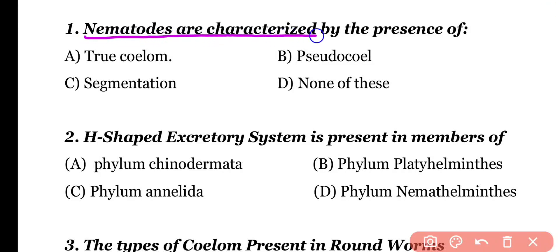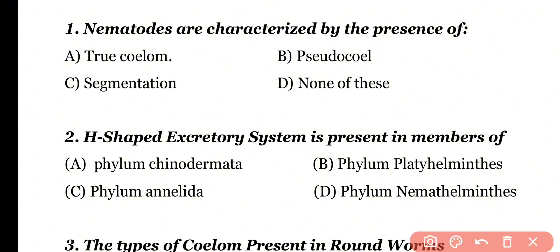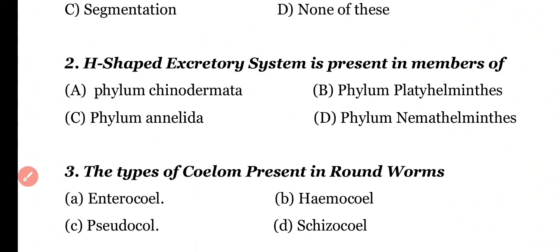Question 1: Nematodes are characterized by the presence of triosilome, pseudocoelom, segmentation, or none of these. Correct answer is option B. Nematodes have a specialized type of coelom known as pseudocoelom.